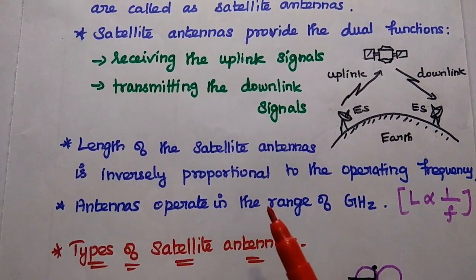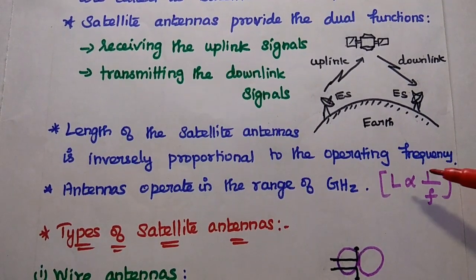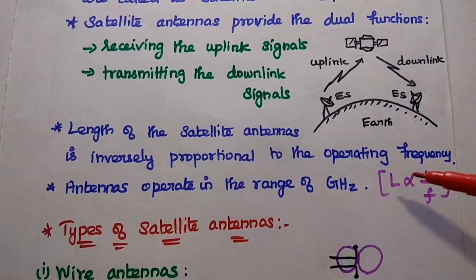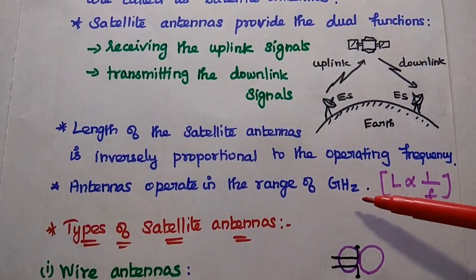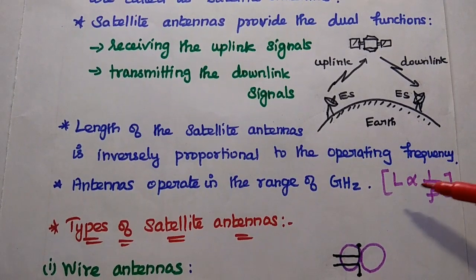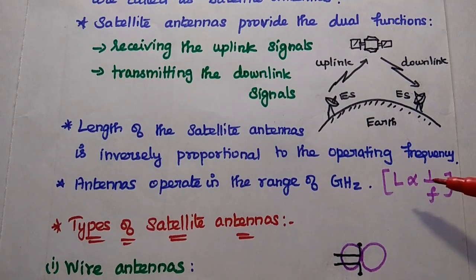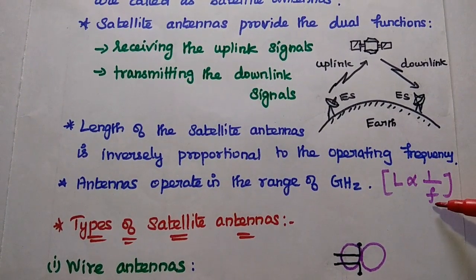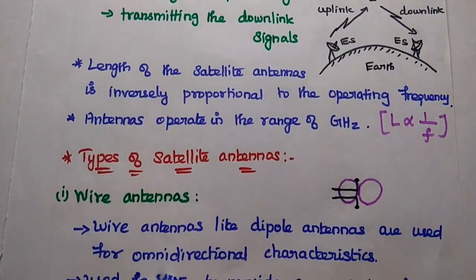The length of the satellite antennas is inversely proportional to the operating frequency. Satellite communication works in the range of GHz, so antennas operate in the GHz range. Hence the length of the satellite antennas is very small compared to the frequency range, because length L is inversely proportional to the operating frequency.